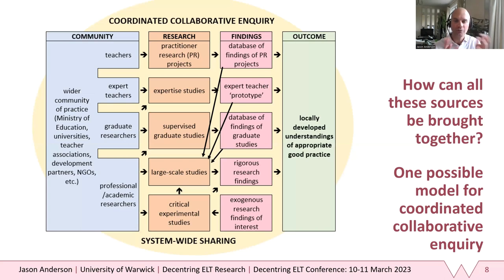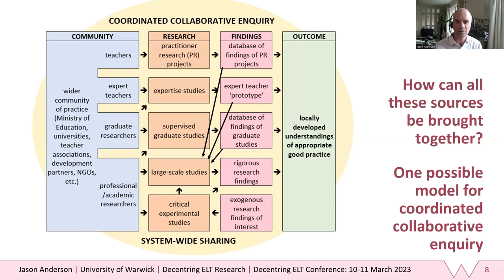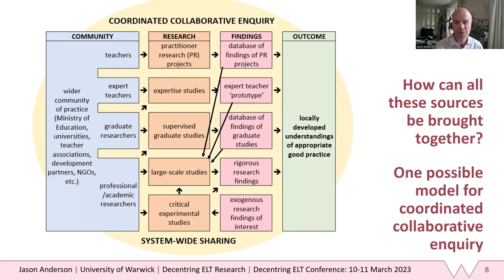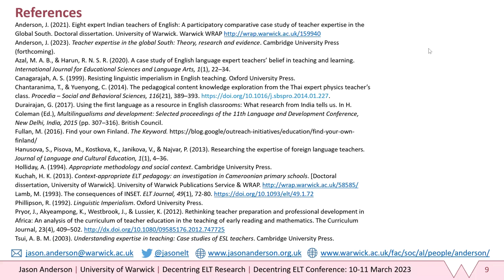When brought together, all of these research practices can help us develop a vision of what is appropriate good practice. By coordinating research together in this way, we strengthen not only the research community itself and its ability to produce useful findings, but also the professional development of the people involved. We all know that teachers benefit from conducting action research — the same is true for researchers in professional institutions and members of the ministry within a collaborative professionalism model. All of these elements need to work together to achieve the outcome of interest. I hope you found this model useful and interesting, and I'll be able to answer any questions shortly. Thank you.